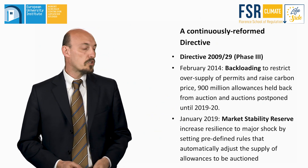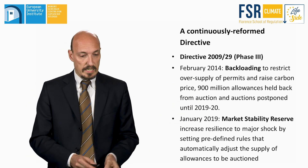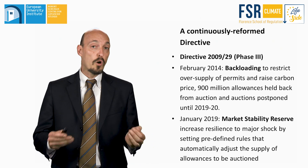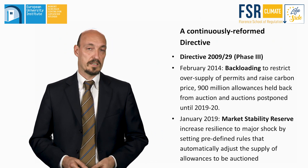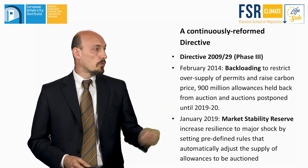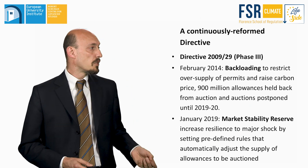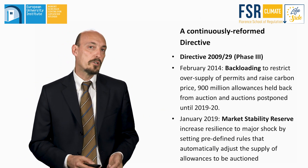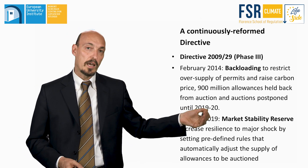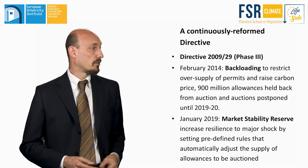The first major revision was Directive 2009/29, which increased the number of sectors covered by the ETS and also the number of greenhouse gases included. In February 2014, to restrict the oversupply of permits and raise carbon prices, the EU passed the so-called backloading measure: 900 million allowances were held back from auction and postponed to the end of the third phase.